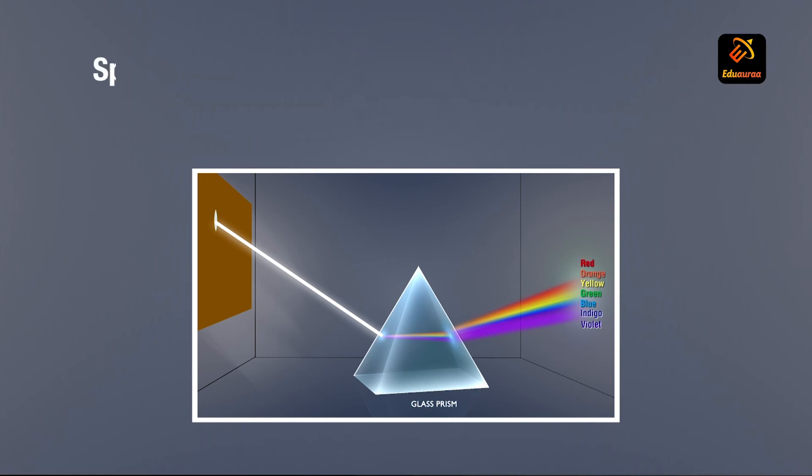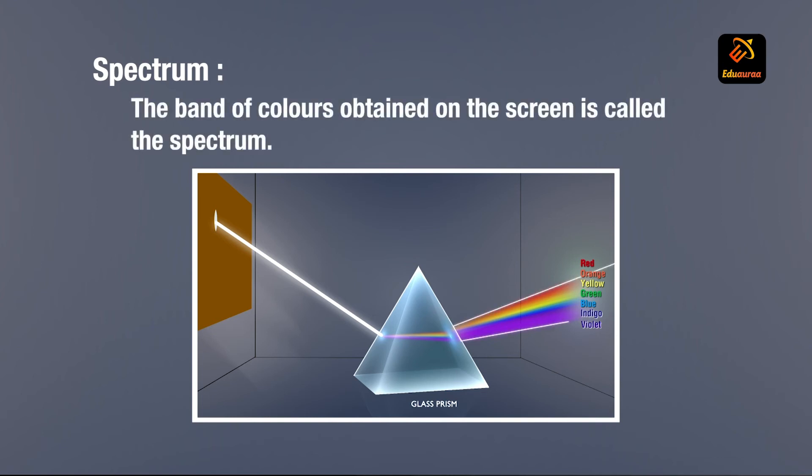Next is spectrum. What is spectrum? The band of colors obtained on the screen is called spectrum.